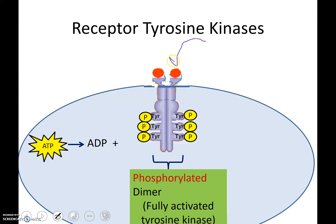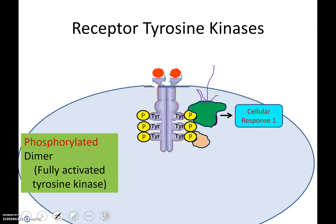A separate protein comes in and goes through a conformational change in shape — you can see here how the shape changes. That's going to then lead to its own signal transduction pathway and a cellular response. Then a different relay protein comes in and is activated by a different tyrosine region, goes through a conformational change in shape, and activates a different signal transduction pathway, leading to a different cell response.